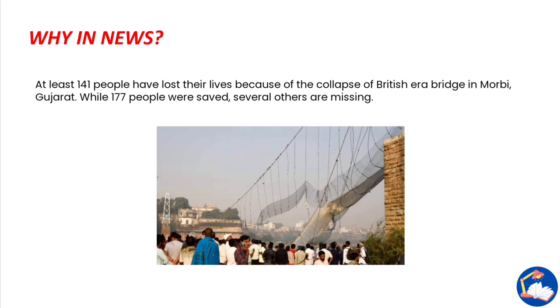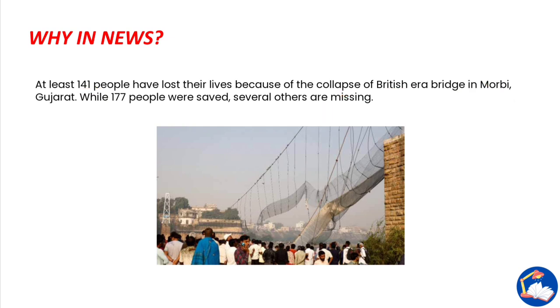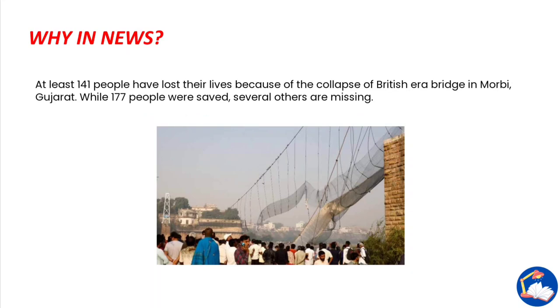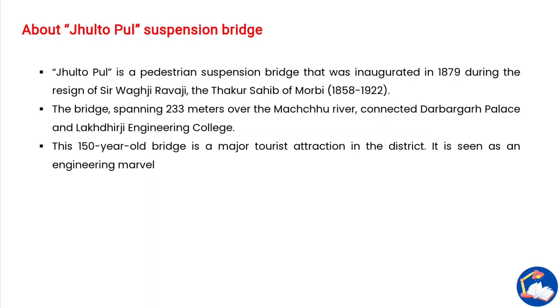In today's video we'll be looking at the topic of suspension bridges. Recently, about 141 people lost their lives because of the collapse of a British-era bridge in Morbi, Gujarat. There were 177 people who were saved and several others are still missing. This is a picture of the incident where the suspension bridge collapsed.